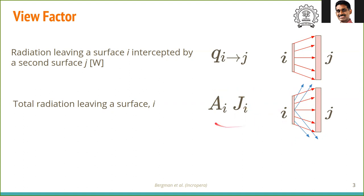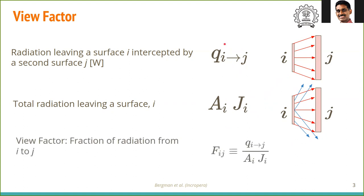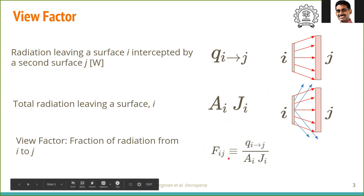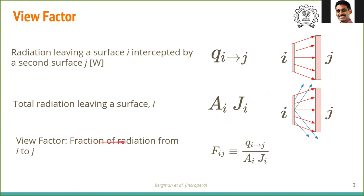The sum total of all radiation leaving surface i is the total radiation going out, which is simply radiosity — the sum of reflected and emitted radiation — times the area of i. The ratio of Q_i to j divided by A_i times J_i is defined as the view factor. It is called the view factor because it represents how much this surface views the second surface.